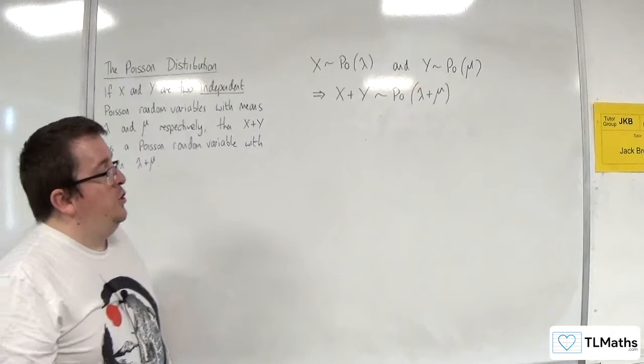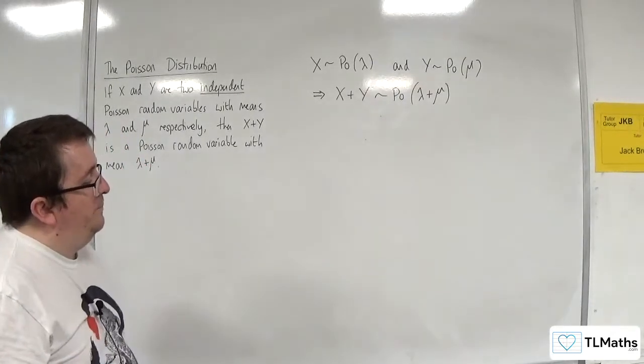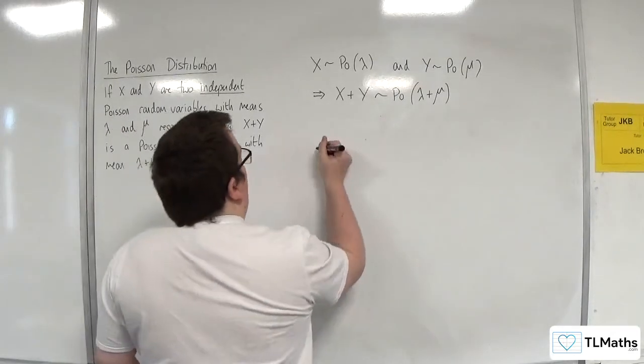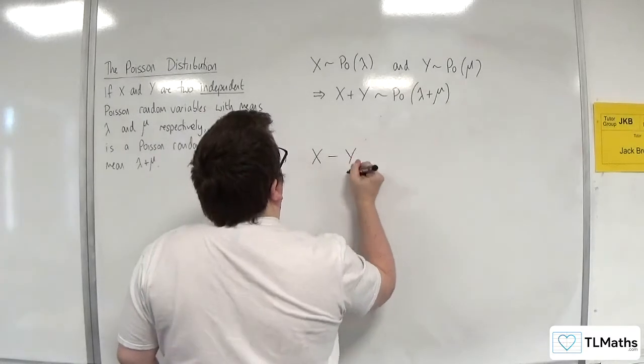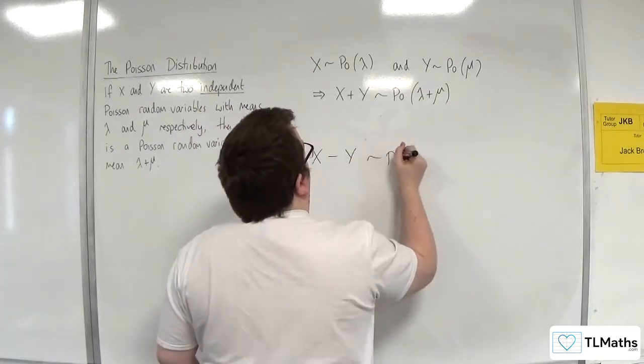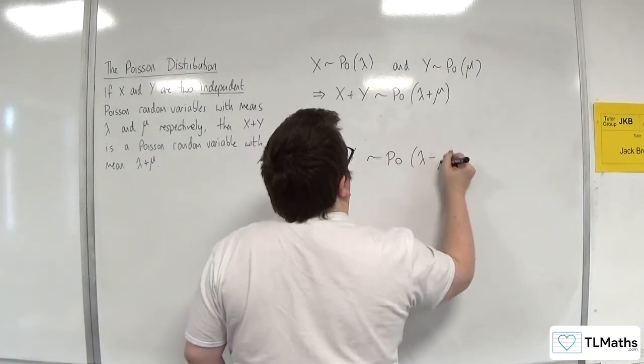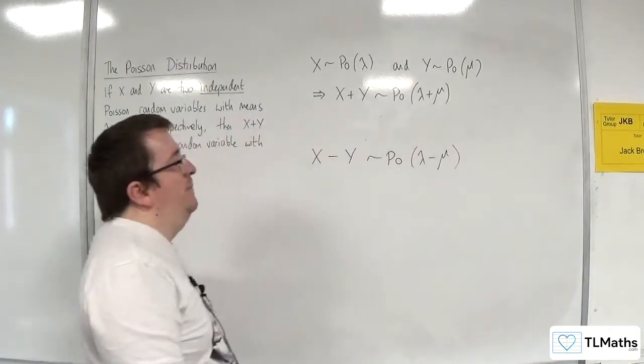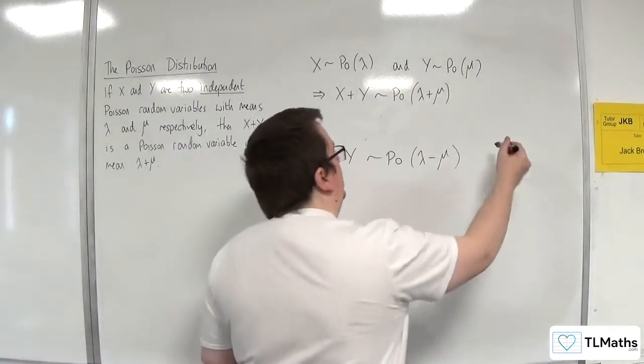And I guess the question, the natural extension to that is: What about if we do X take away Y? Is that a Poisson distribution with mean lambda take away mu? Is that the case?